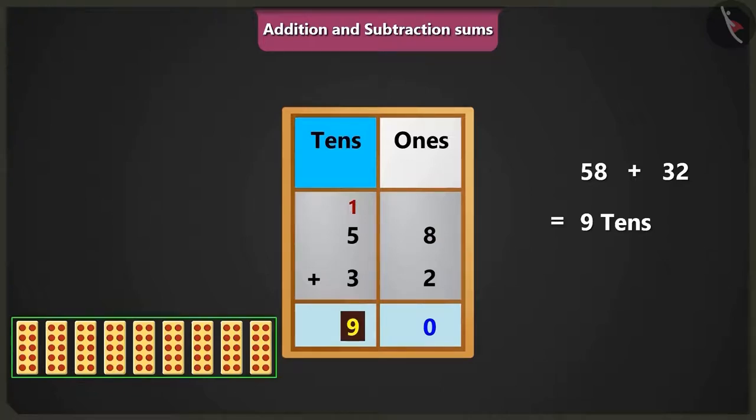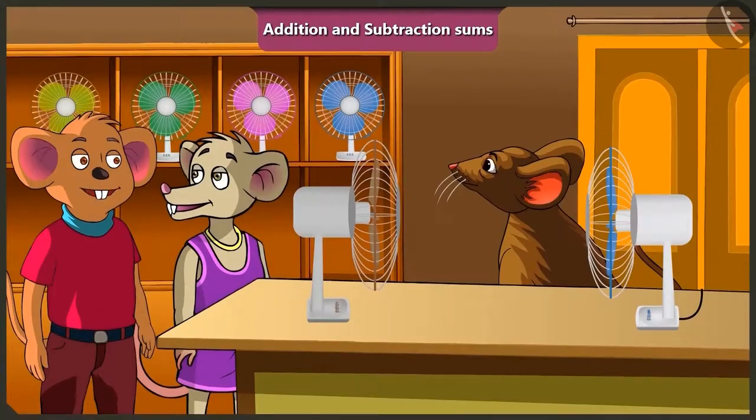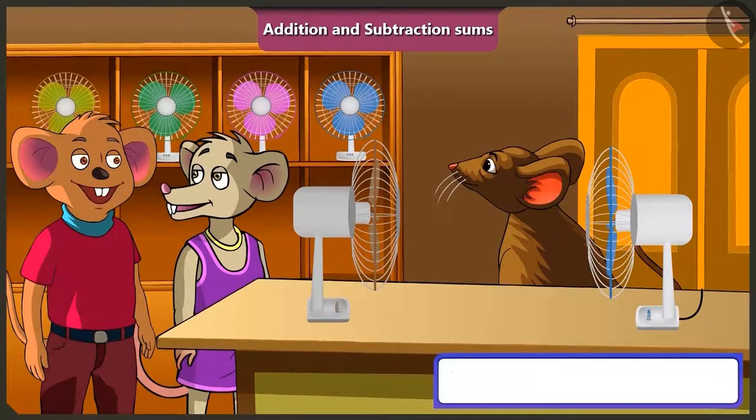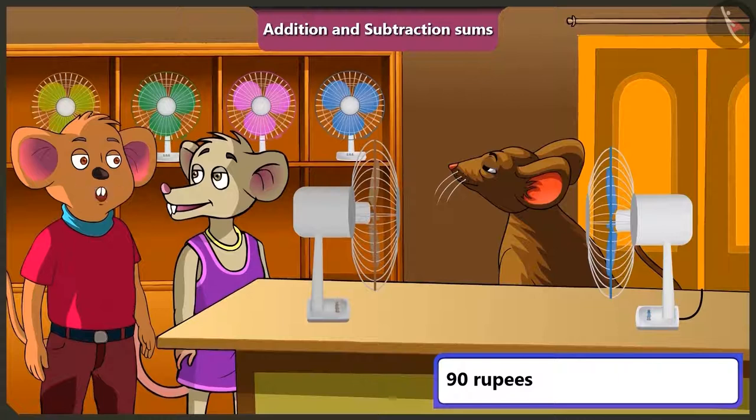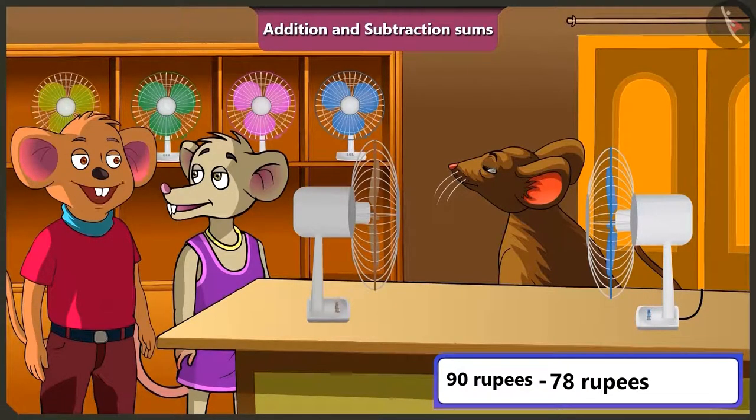Yes, 9 tens means 90 rupees. Oh yes. If I sell old fan, then I will have a total of 90 rupees. So if I will give 90 rupees to the fan seller and buy a new fan for 78, how many rupees would I have left?